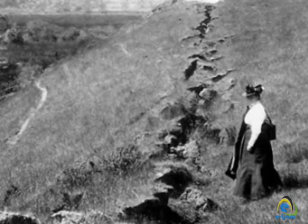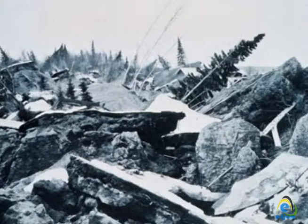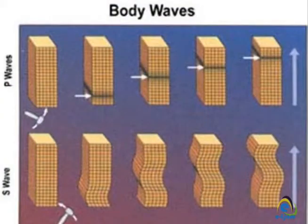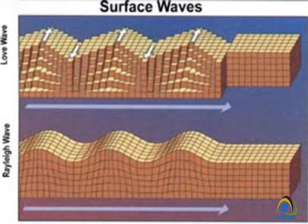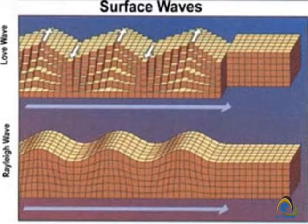An example of this is Missouri, USA, in 1811 and 1812. Earthquakes generally release two types of waves: body waves, which move toward the earth's interior, and surface waves, which travel on the surface. Each type of wave travels at different speeds and causes different movements in the earth's lithosphere.